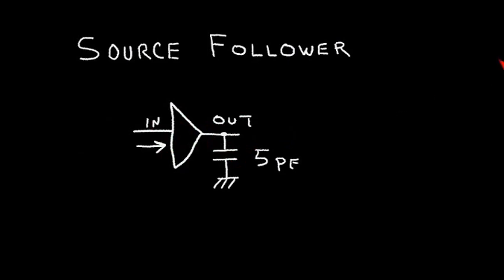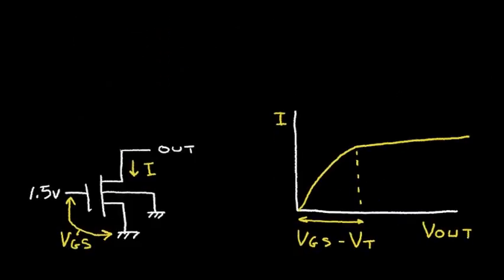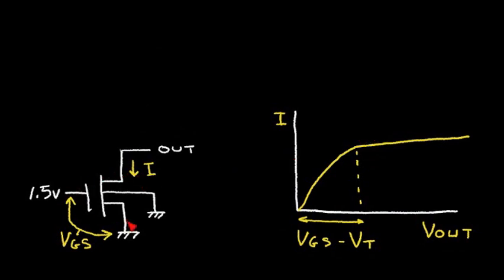Recall from a previous video on the CMOS current source that we had an n-channel transistor with the gate connected at 1.5 volts, and here we have the output of the current source with current I. Over to the right we have a graph of the current in the current source versus the voltage at the current source output, V-out. We got this curve, and at this point it became more or less a constant current source with some slope.